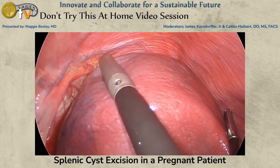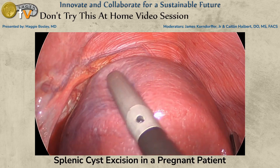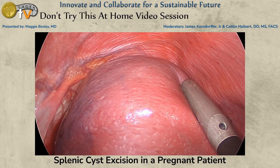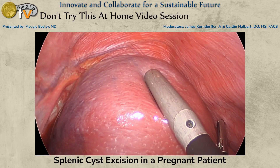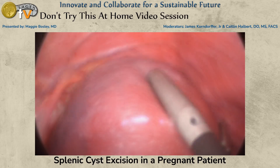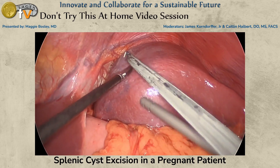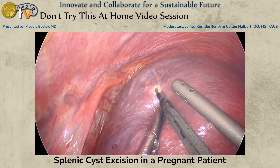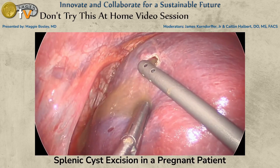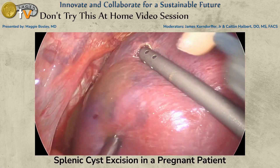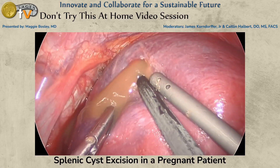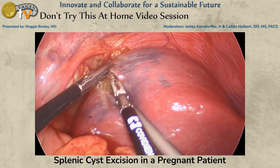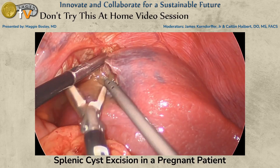After adequately mobilizing the spleen and feeling confident we could control the hilum, we used laparoscopic ultrasound to characterize the cyst cavity and determine the best point of entry. We then used hook cautery to enter the cyst, and a copious amount of fluid was suctioned out.